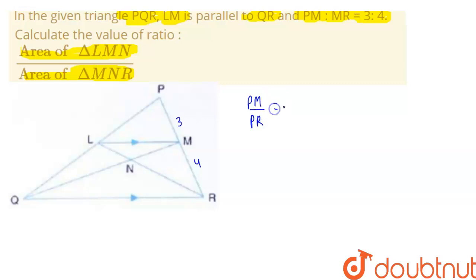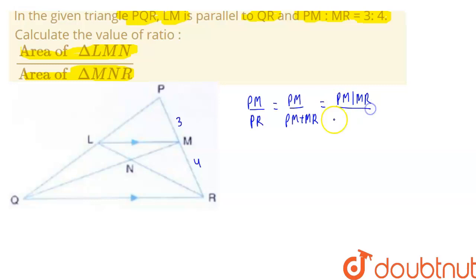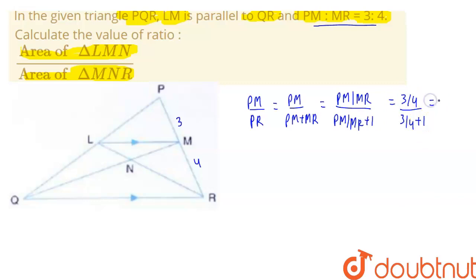First, we find the ratio PM upon PR. We rewrite PR as PM plus MR. Dividing numerator and denominator by MR, we get (PM/MR) divided by (PM/MR + 1). Substituting PM/MR = 3/4, we get (3/4) divided by (3/4 + 1) = 3/7. So PM upon PR equals 3/7. Let us call this equation 1.